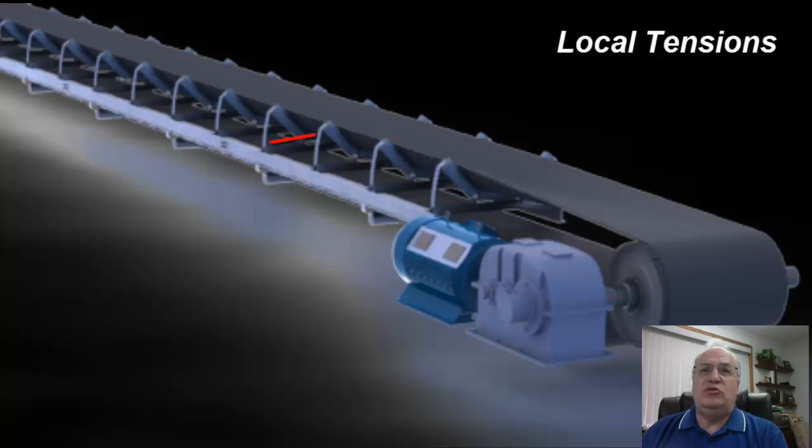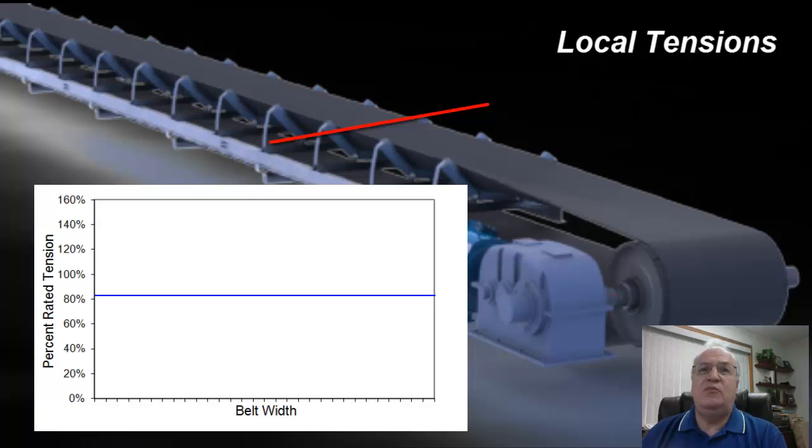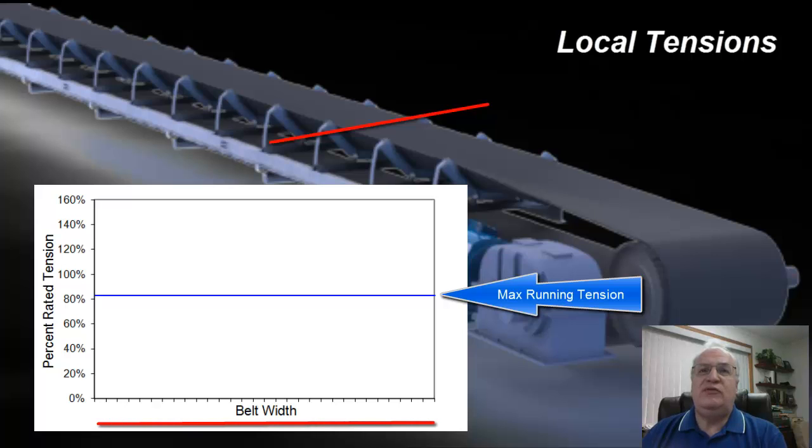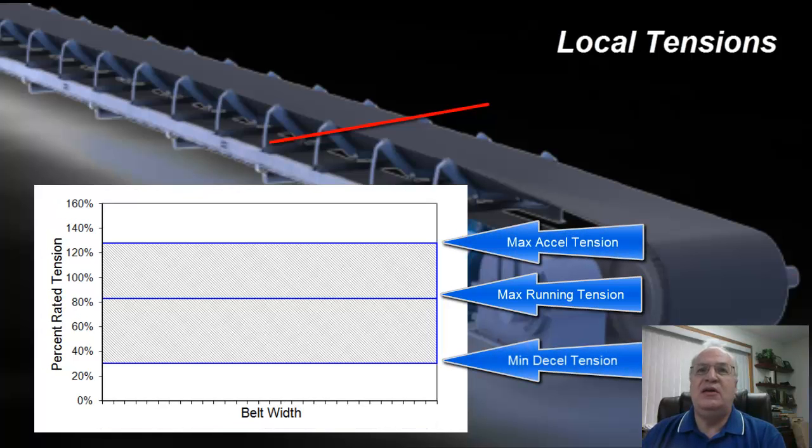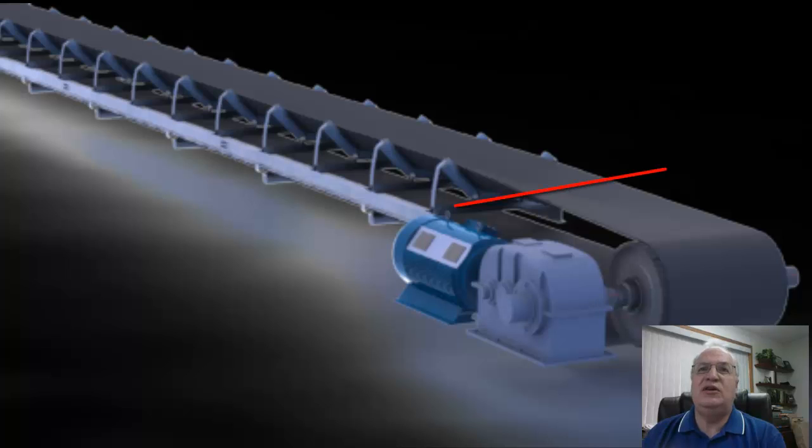Now we're going to go on to local tensions. Local tensions is what we consider to be what's happening across the width of the belt at any place on the conveyor. Our maximum running tension, if we look at where the belt's not being stretched abnormally across the width, the average is going to be the same pretty much across the width of the belt. And if we apply our maximum acceleration tension and minimum deceleration tensions, we can get the range of tensions at this particular section of belt at any time during this particular loading condition.